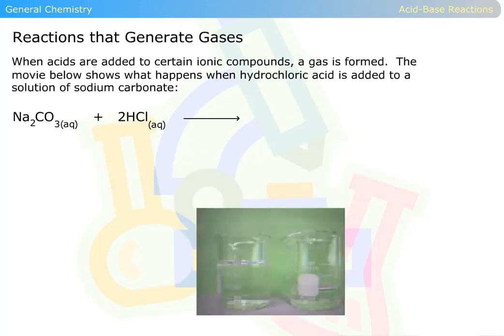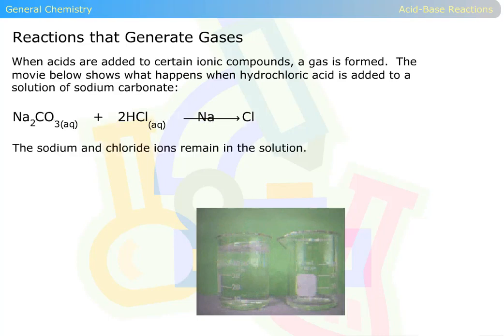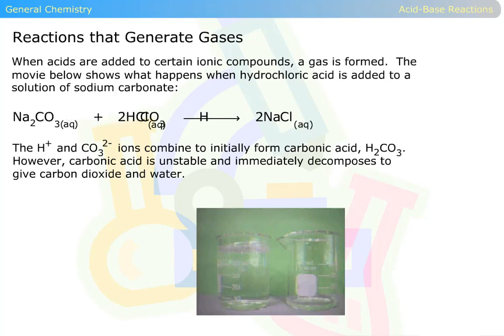Reactions that generate gases. When acids are added to certain ionic compounds, a gas is formed. The movie below shows what happens when hydrochloric acid is added to a solution of sodium carbonate. The sodium and chloride ions remain in the solution. The H+ and CO3 2- ions combine to initially form carbonic acid, H2CO3.